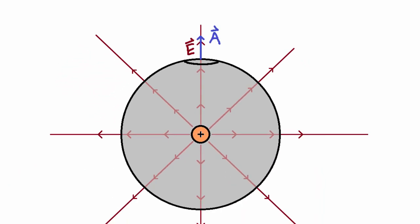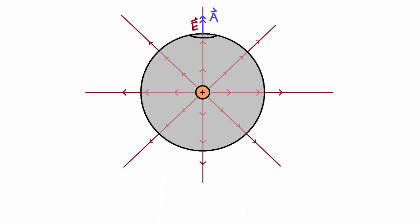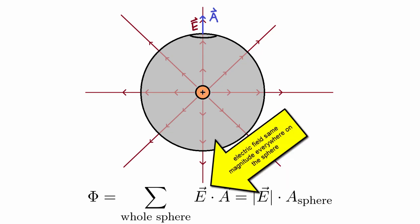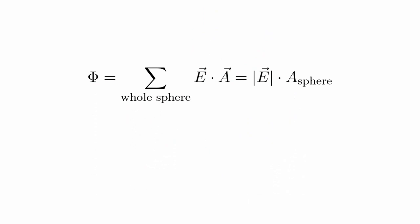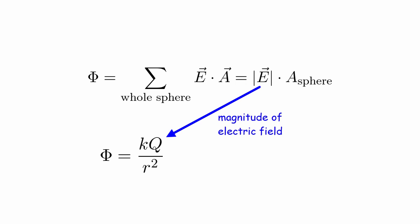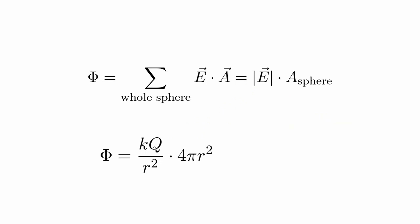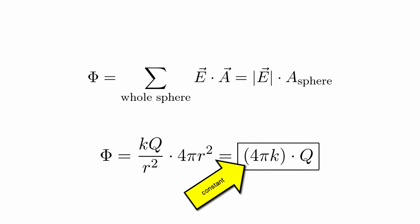Because the cosine term will disappear since theta will be zero for this example. If we apply this for the entire sphere, then the flux will just be equal to the magnitude of the electric field at the sphere multiplied by the total area of the sphere, since the electric field at any location on the sphere will have to be the same. We know the equation for electric field from Coulomb's law, and the surface area of a sphere is given by 4πr². So we can work out the total flux, which will just be equal to some constant multiplied by the charge in the middle.